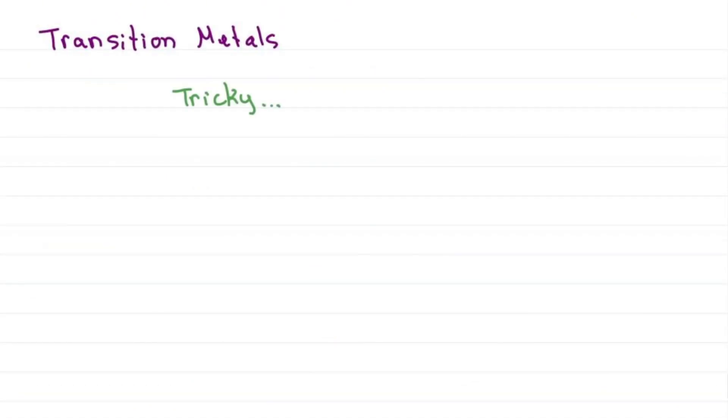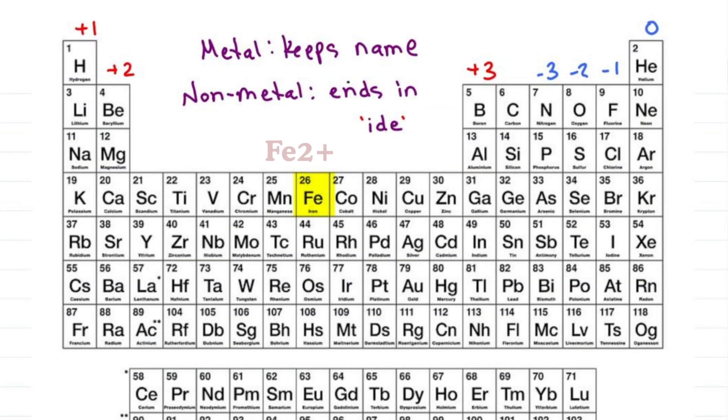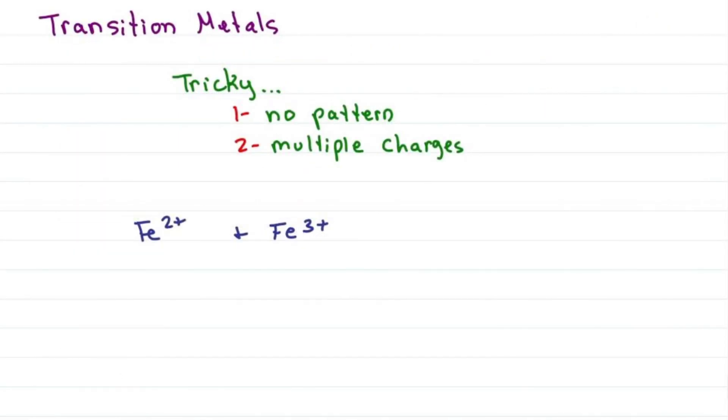Transition metals are tricky because they don't follow an easy to memorize charge pattern. In fact, they can have more than one charge. Iron can exist as plus 2 and plus 3. So how do you know which ones to use? There are two clues to look out for.